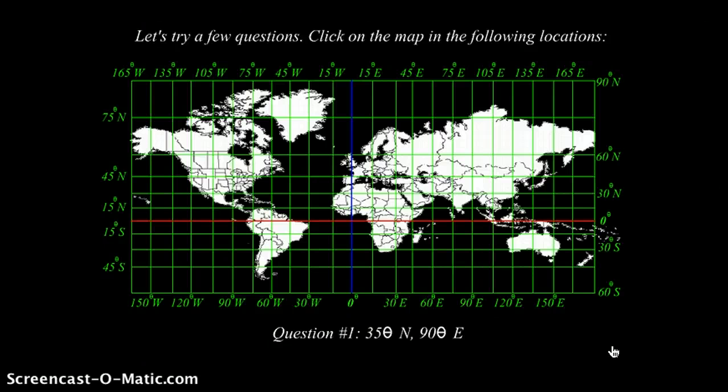Let's try a few questions. Click on the map in the following locations. Question 1: This is 35 degrees north, 90 degrees east. Once again, you're going to go in and practice this for yourself. The link is in Edmodo. Once you have completed it, come back to the video.